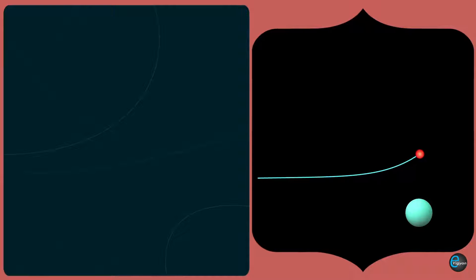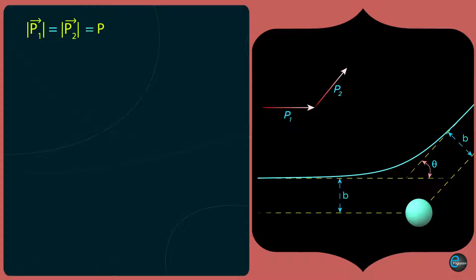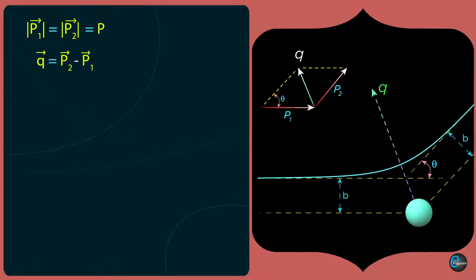Consider an alpha particle approaching the target nucleus such that the line of incidence is at a distance b from the center of the nucleus. If the scattering angle is θ, the linear momentum of the incident alpha particle is p₁, and the linear momentum of the same alpha particle after scattering is p₂. Assuming elastic scattering, p₁ and p₂ are equal in magnitude, both equal to p. The change in momentum is q = p₂ − p₁, directed along the line joining the nucleus to the point of closest approach.